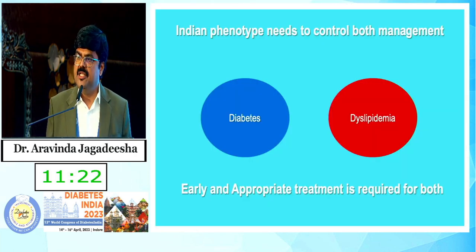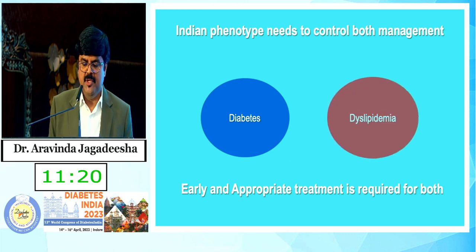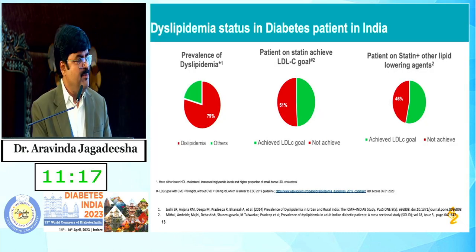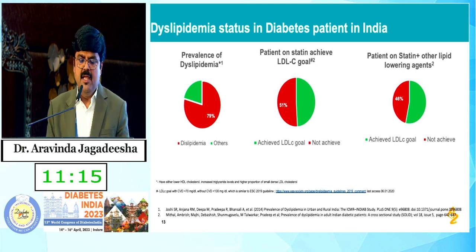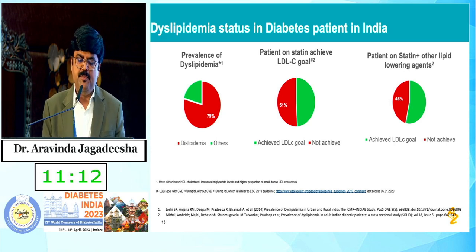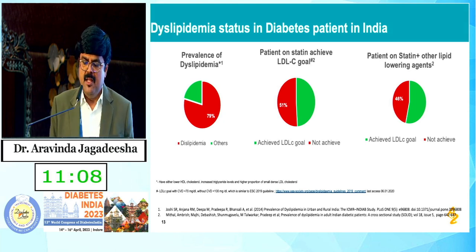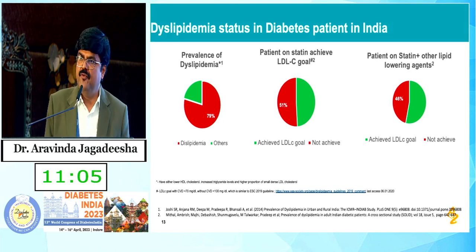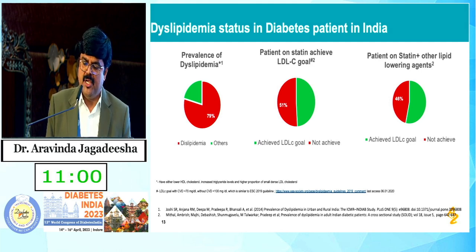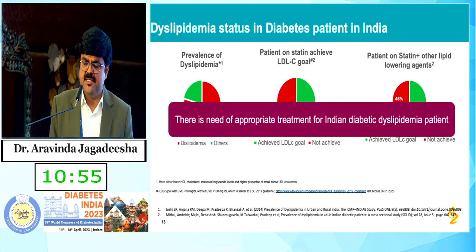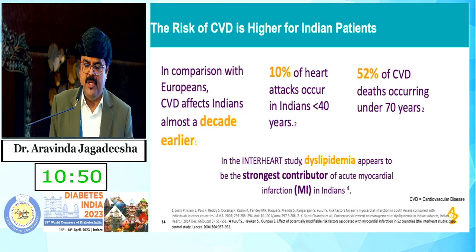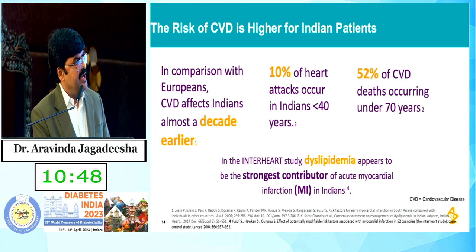Now coming to an important aspect — dyslipidemia management. The prevalence of dyslipidemia in Indian diabetic patients is 79 percent. Patients on statin achieving LDL goals is 51 percent, and patients on statin plus other lipid-lowering agents achieving LDL goal is more than 50 percent. There is a need for appropriate treatment for Indian diabetic dyslipidemia.